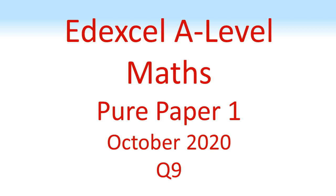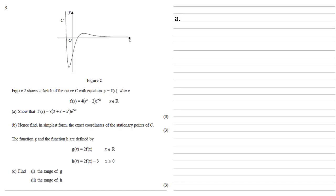Edexcel A-Level Maths Pure Paper 1 October 2020 Question 9. Figure 2 shows a sketch of the curve C with equation y equals f of x, where f of x equals 4 times x squared minus 2 times e to the minus 2x.